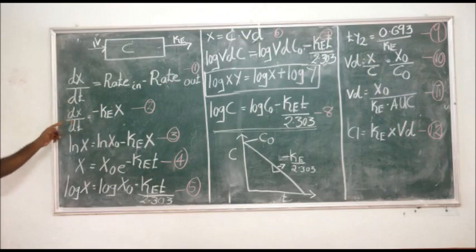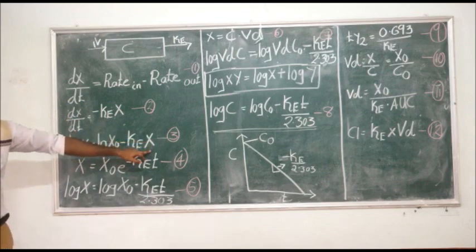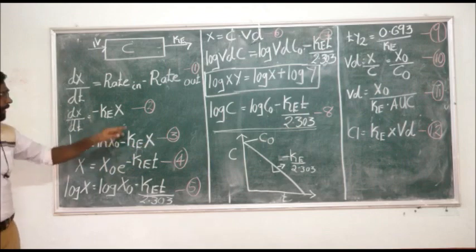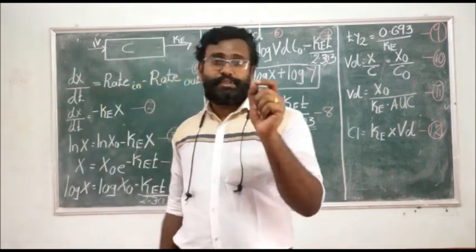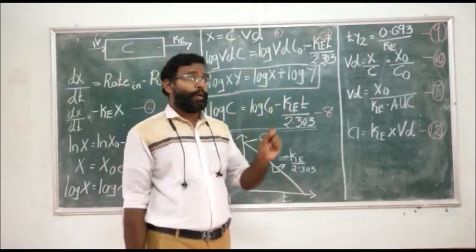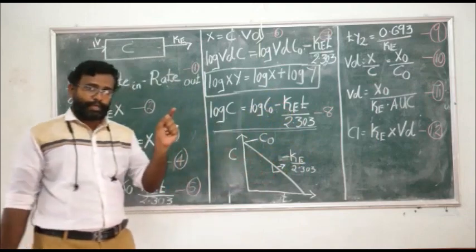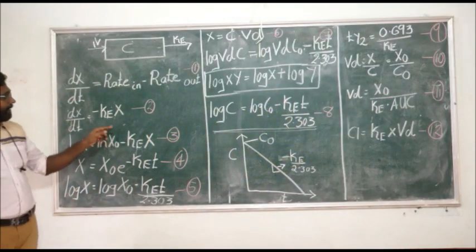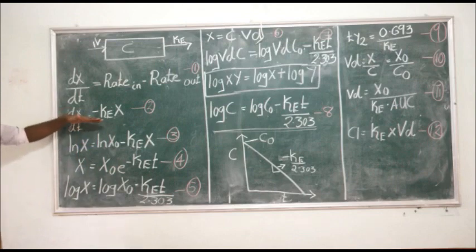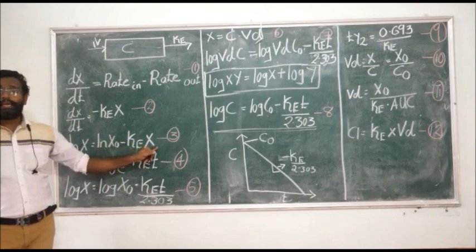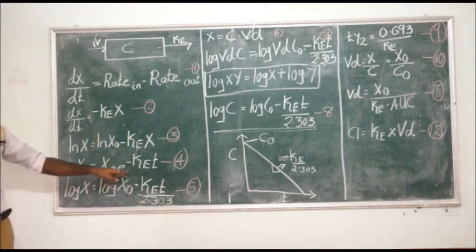Now if you integrate the equation dX/dt = -Ke·X, you will get: log X = log X0 - Ke·t. Here X is the amount of drug present in the body at a particular time t, and X0 is the amount of drug administered — the dose. So if 500 mg of drug is administered, X0 is 500 mg. After integration and converting from logarithmic to exponential form, you get: X = X0·e^(-Ke·t), and in log form: log X = log X0 - Ke·t.